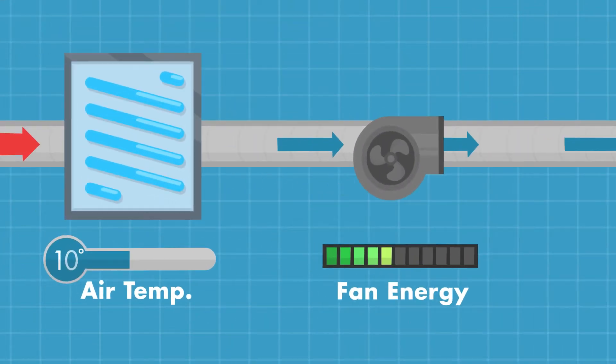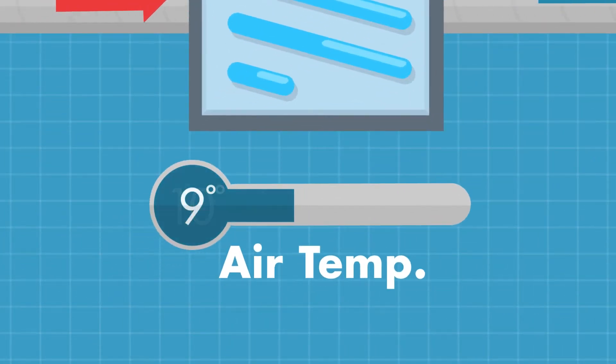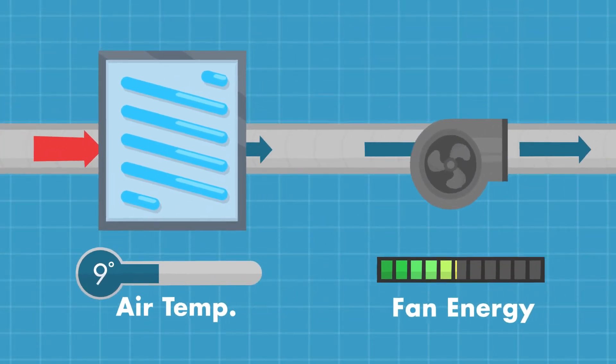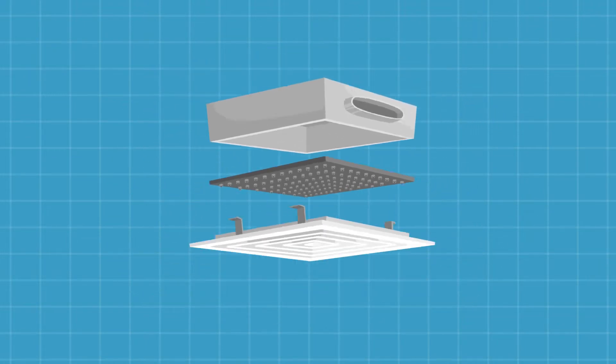With Dedenko infusers, Albert can also lower the primary air temperature even further, providing additional cooling without raising fan energy. And because infusers have no moving parts, Albert saves on maintenance costs.